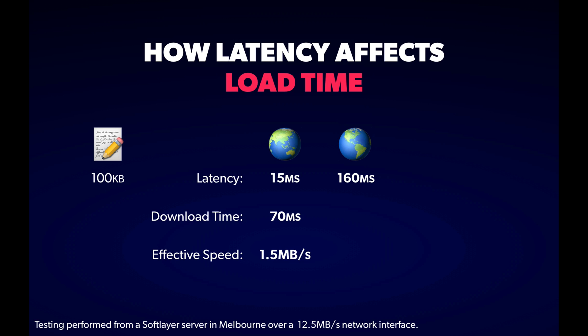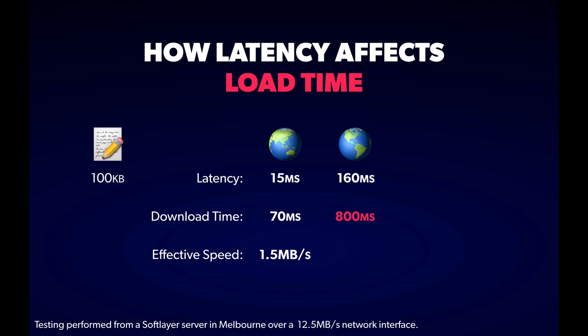How long does that 100 kilobyte file now take to download? You might expect you can simply add the transfer time to the extra latency and get the new figure. After all, every connection between me and that server has plenty of bandwidth, so nothing should be slowing it down. Well, no. When I did this test, I measured 800 milliseconds — more than 10 times slower — giving an effective speed of only 125 kilobytes a second. How did an increase in latency of less than 150 milliseconds create a delay of over 700?